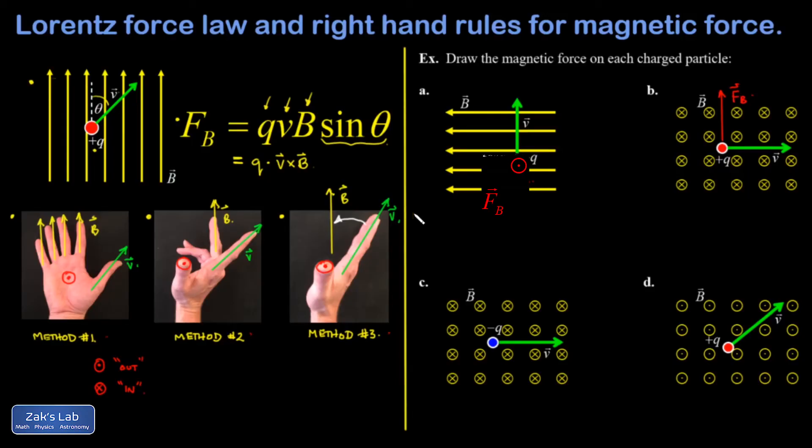Again, I encourage you to check out these other methods too. Like for example, I can put my fingers pointing into the page for the magnetic field lines, my thumb pointing to the right, and then my palm would point straight upward. I get the same answer.